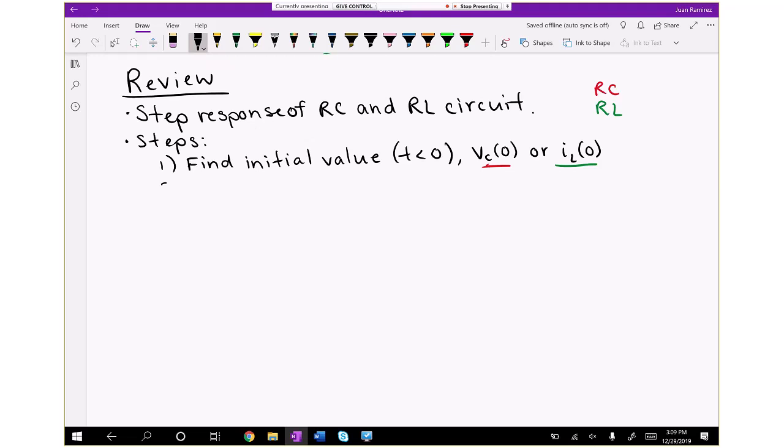Now the second step, now that you've found that initial capacitor voltage or initial inductor current, is to find the final value. That's assuming you're in the final state for a long time so that it's now in steady state. That will tell you the final capacitor voltage or the final inductor current.